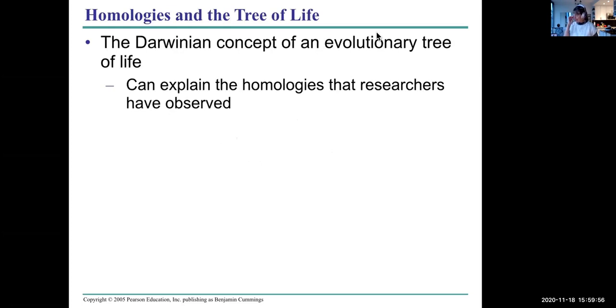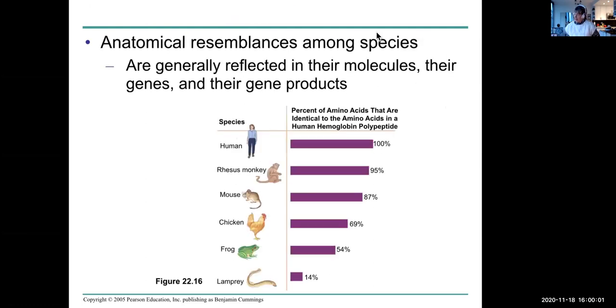So this concept of the evolutionary tree of life explains homologies that we've observed. And what we could observe before there was DNA analysis were anatomical resemblances among species. They're reflected in molecules, genes, and gene products.